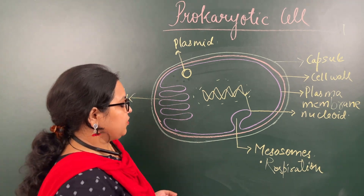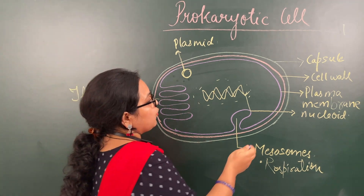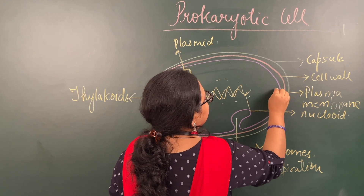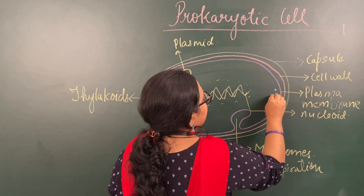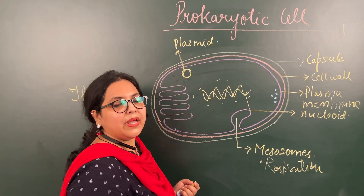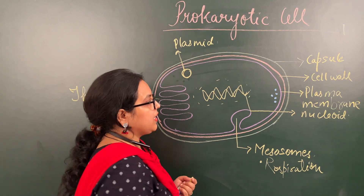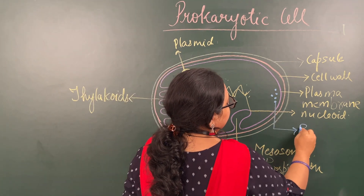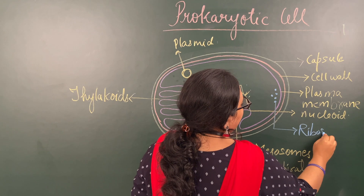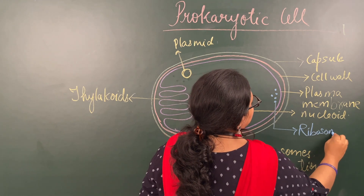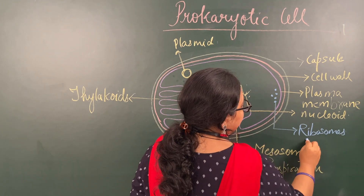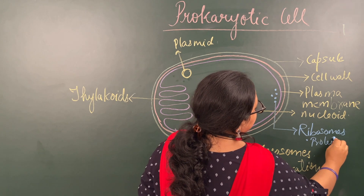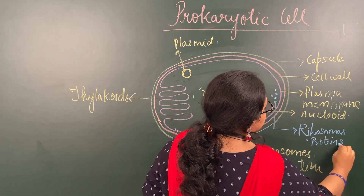The next thing present in the prokaryotic cell is ribosomes — small circular bodies present in the cytoplasm. These are ribosomes and they help in protein synthesis.